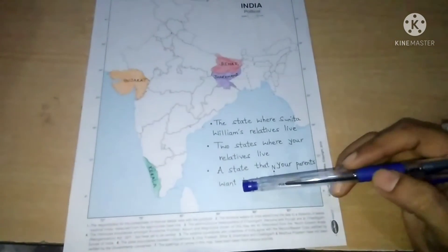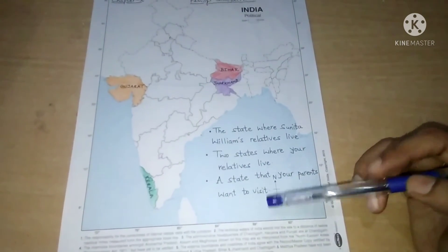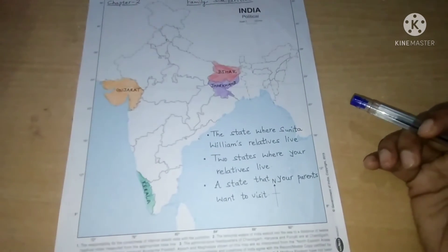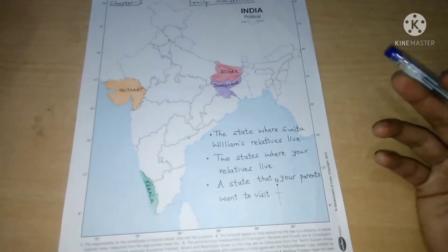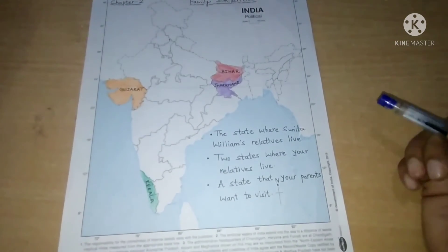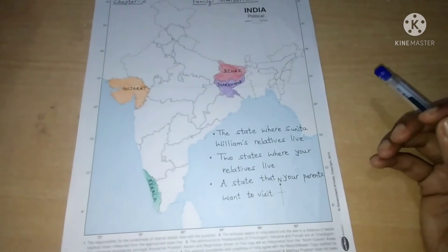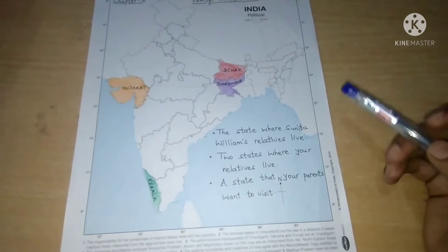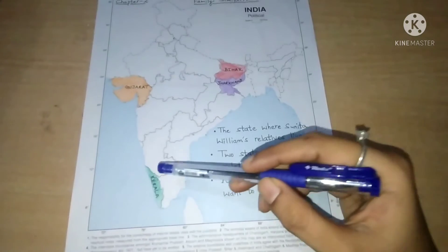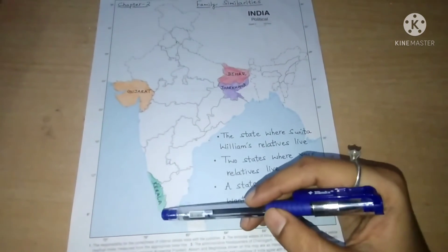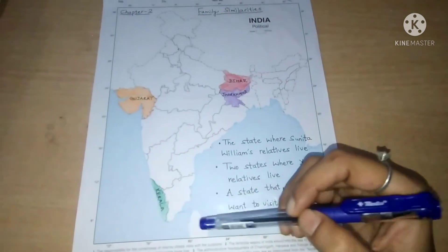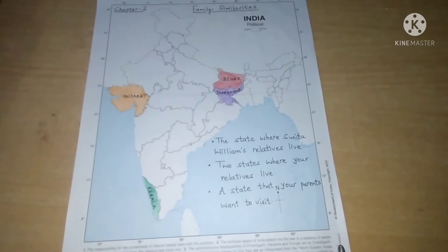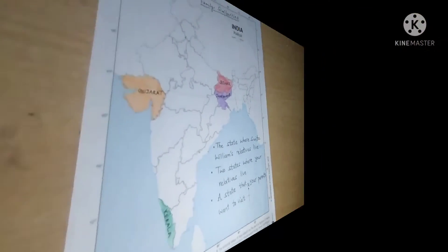Number 3 is a state that your parents want to visit. This you will also do yourself — ask your parents which state they want to visit and mark that state. As for me, my parents want to visit Kerala, so I have marked Kerala here. In this way, you have to mark these places on the map of India for chapter number 2.